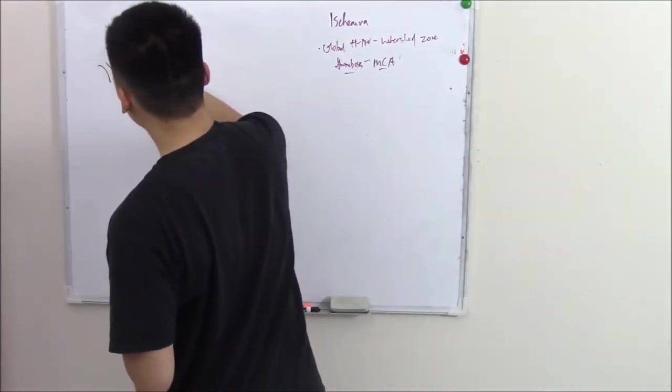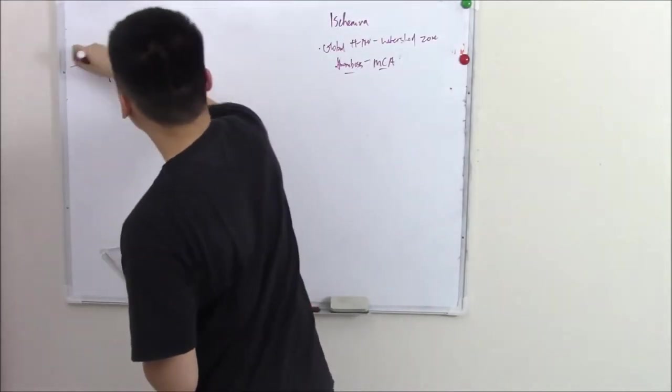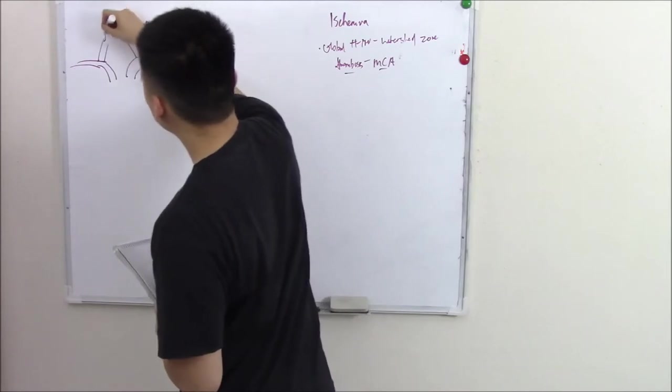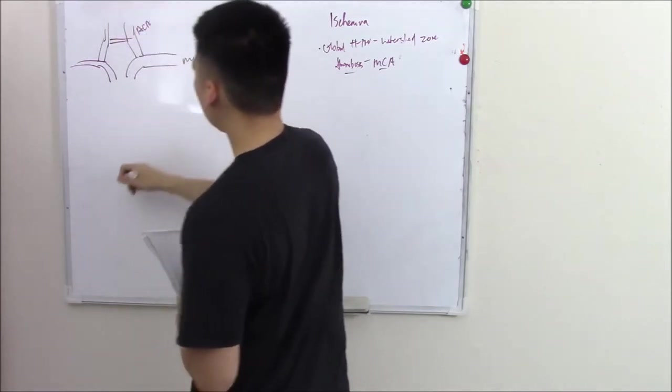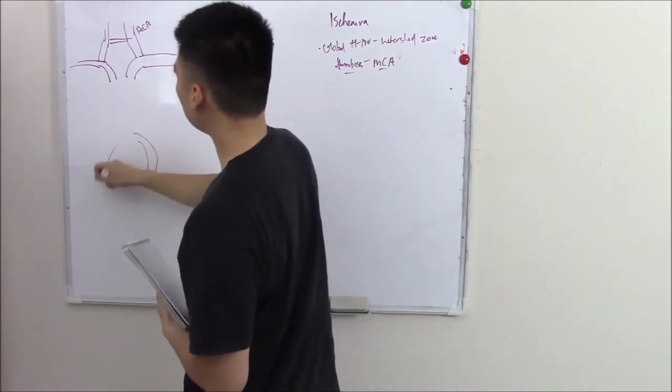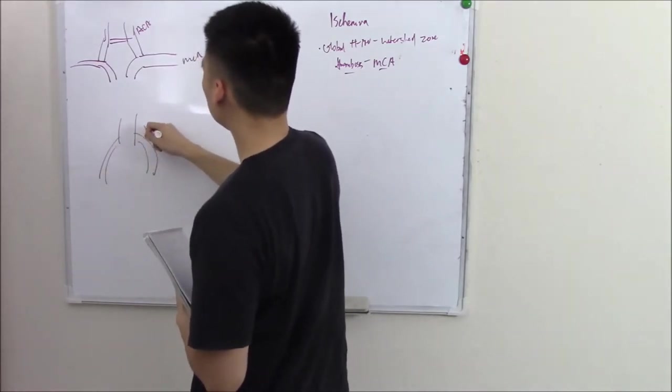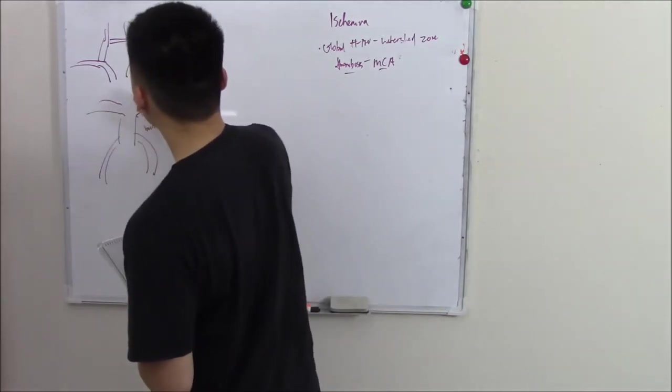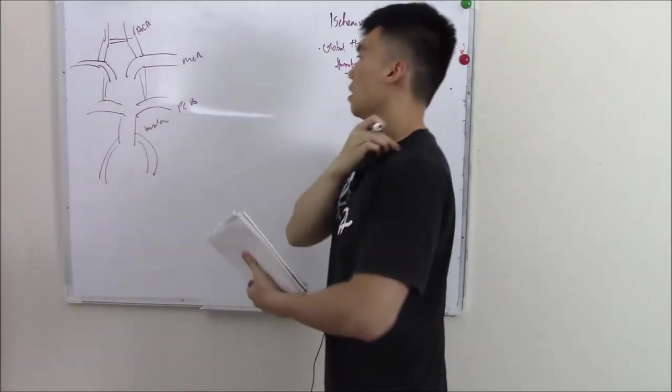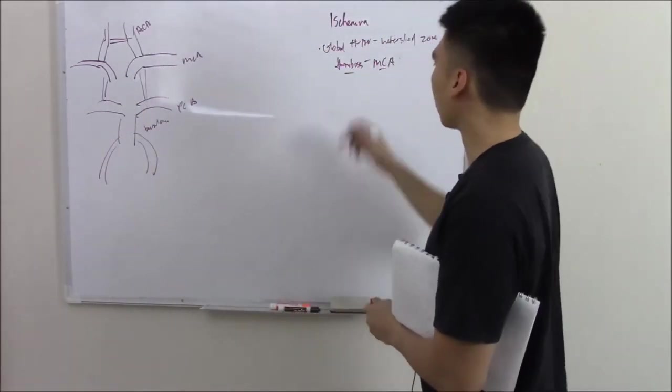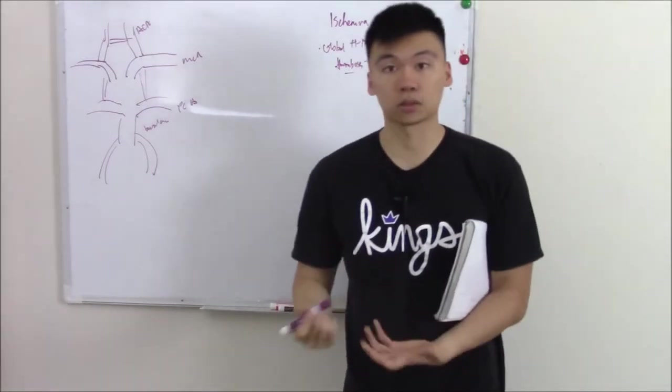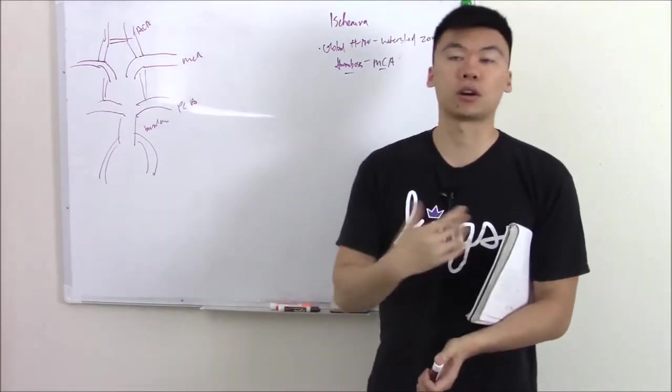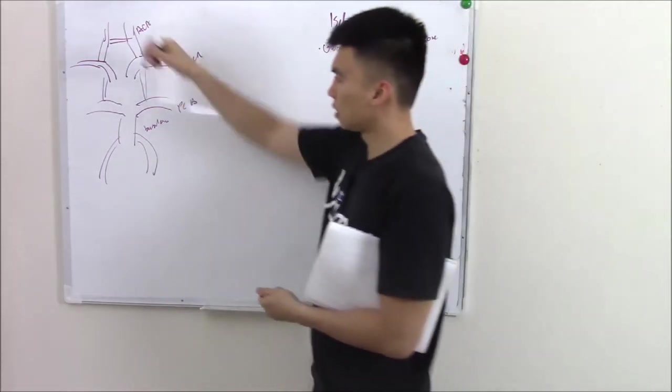So you have your internal carotids and that became your MCA and your ACA, your anterior cerebral artery. And then you also outside your vertebral arteries that fuse together to make your basilar artery. That branched off to your PCA. And that was your circle willis. One of the proposed mechanisms for why thrombosis is more common in your MCA is you have atherosclerosis.